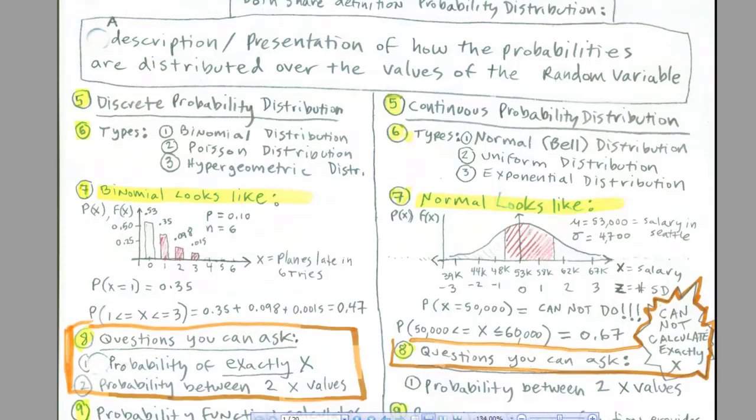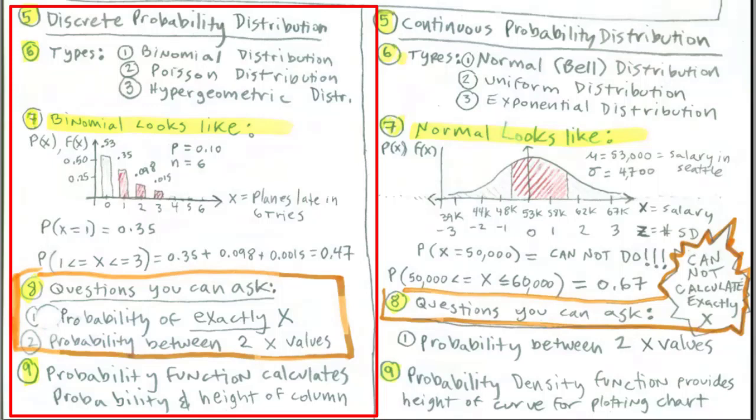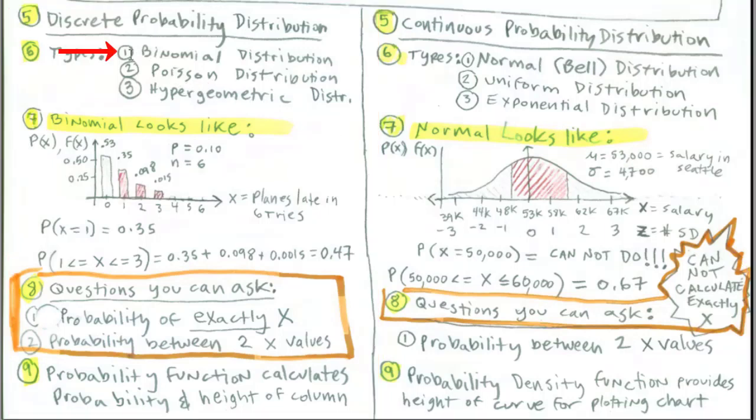Now we want to really strongly differentiate between how we did things last chapter with discrete probability distribution and how we're going to do it with continuous, because there's a huge difference. Last chapter, we talked about binomial, Poisson, and hypergeometric. For example, the binomial distribution looked like this. The height of the columns were both the height of the column and the probability. That height represented the probabilities.